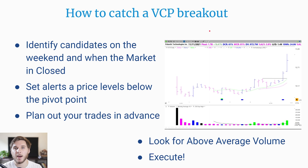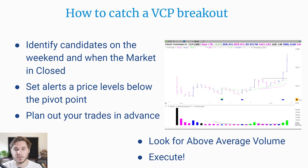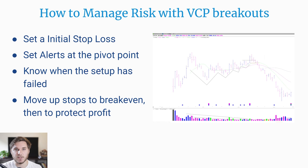Now let's talk about how to catch a VCP breakout. This is pretty similar to catching a regular breakout or even a pullback. You want to identify candidates on the weekend and when the market is closed, set alerts at price levels right below that proper pivot point, and plan out as much of your trades in advance, including your stop loss and position sizing. On the breakout, you want to see very large, above-average volume. Early in the day, you can use volume run rate to estimate whether volume will be above the 10-day, 10-week, or 50-day average.